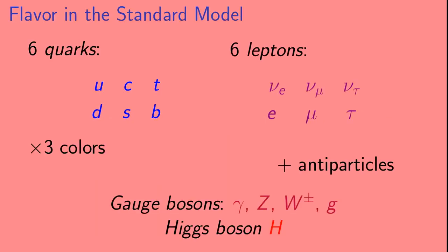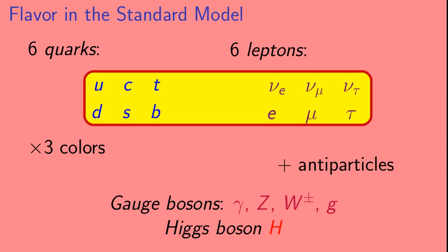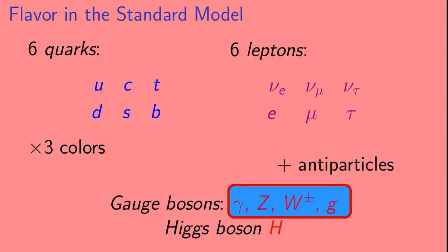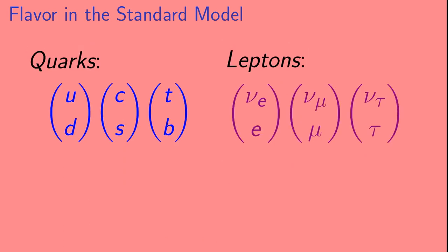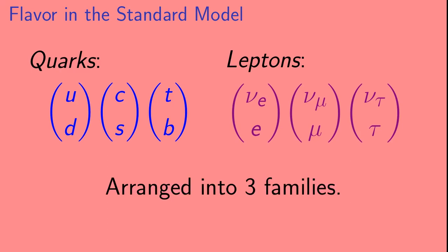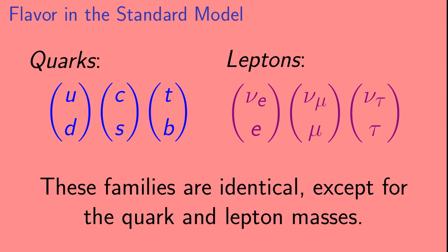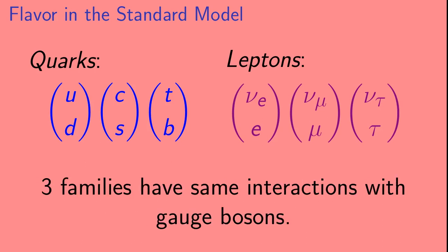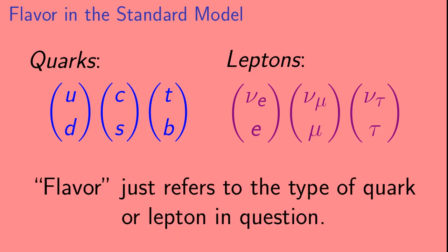Let's start by briefly talking about flavor in the standard model. In the standard model, we have six quarks and six leptons, and these interact with each other through the gauge bosons: the photon, the Z, the W plus and minus, and the gluons. These are arranged into three families, which are identical except for the quark and lepton masses. These three families have the same interactions with the gauge bosons. Flavor just refers to the type of quark or lepton you're talking about — so an electron, a muon, a tau, etc.